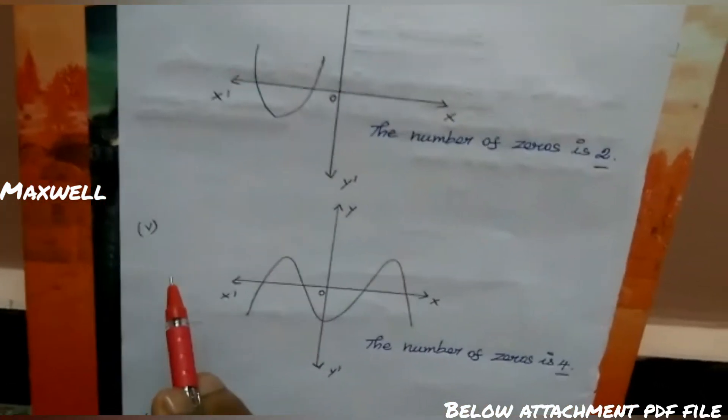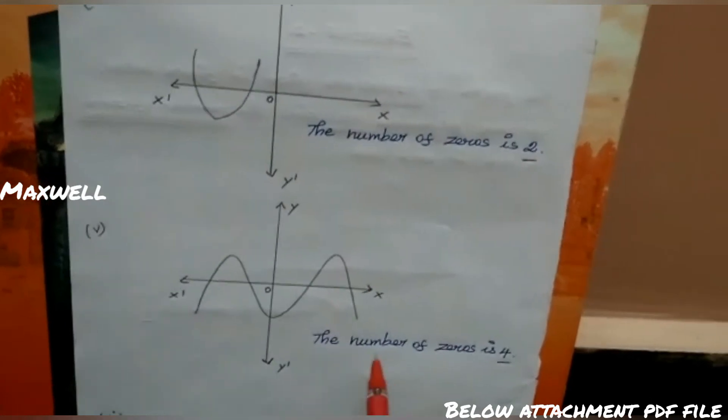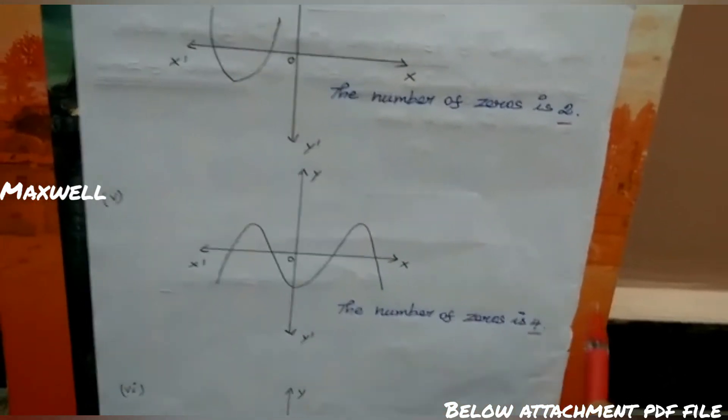Fifth case: one, two, three, four. The number of zeros is 4.